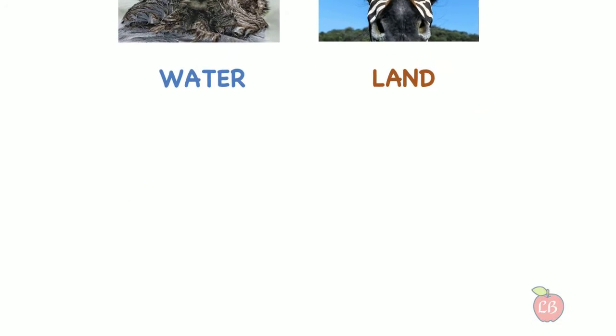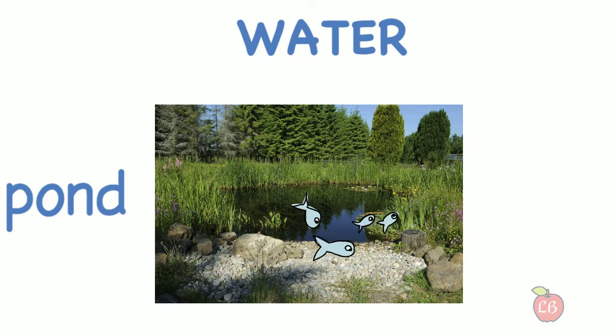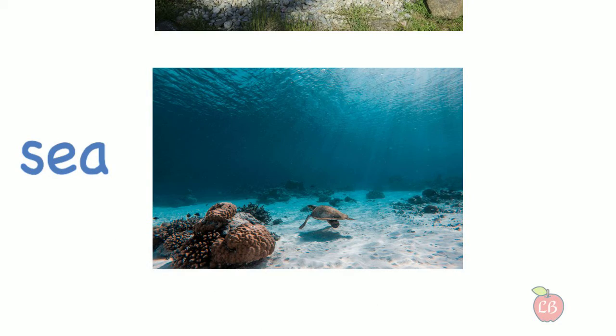Animals living in water can live in a pond, like the fish, or in the sea, like the whale.